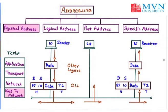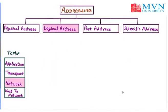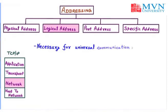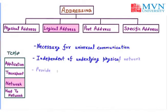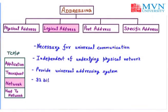Now the next one is the logical address. The logical address is the part of the network layer. The logical address is necessary for universal communication. Also, logical address is independent of underlying architecture as well as the physical network. Logical address provides a universal addressing system that is very unique. All logical addresses are of 32 bits. To understand the logical address, let us take the example of a diagram.